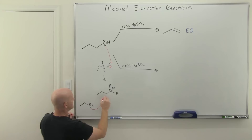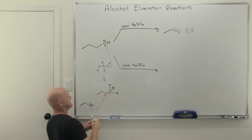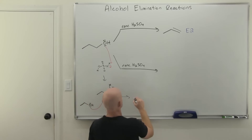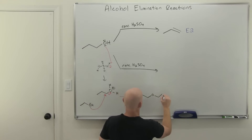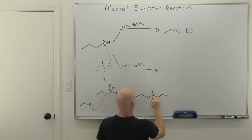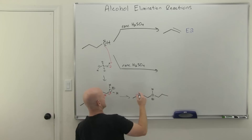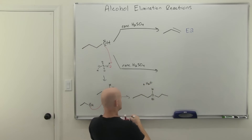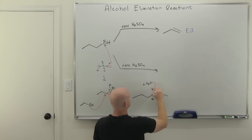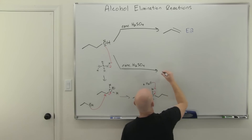The second alcohol molecule does backside attack, kicking off the water leaving group. Then we take that water molecule that just formed and use it to deprotonate the oxygen, forming an ether as our final product.